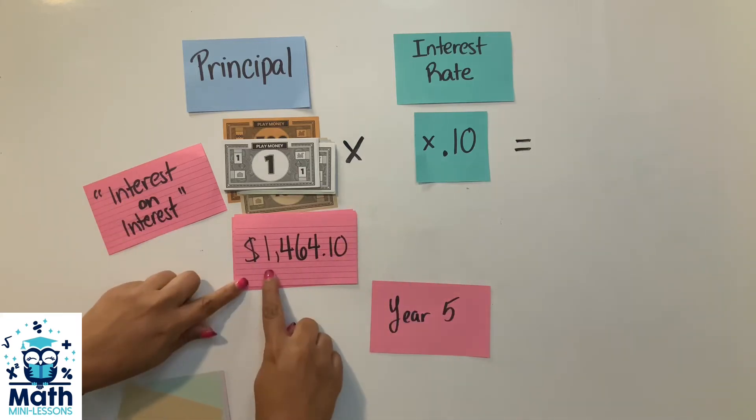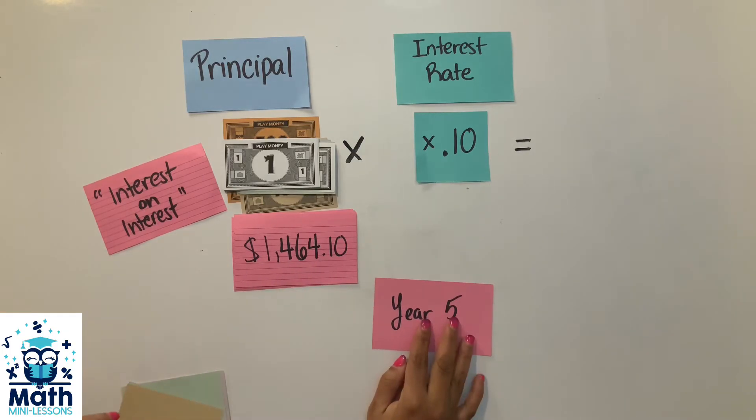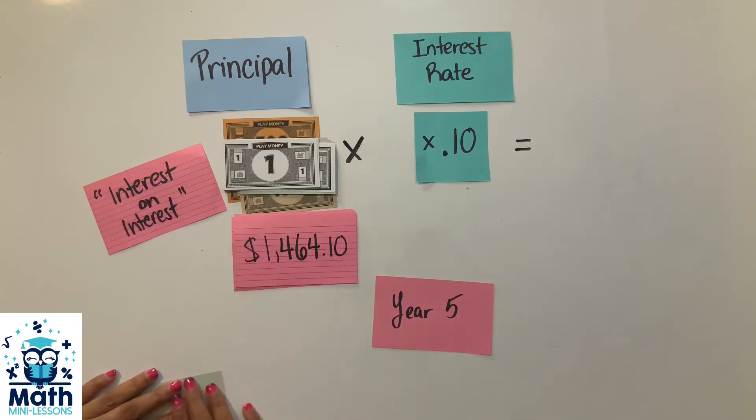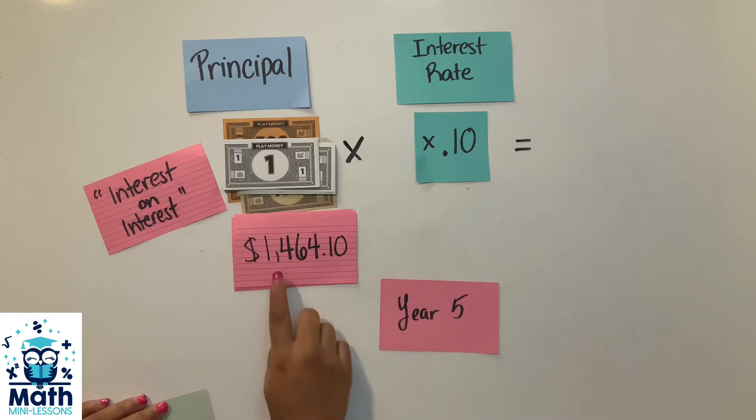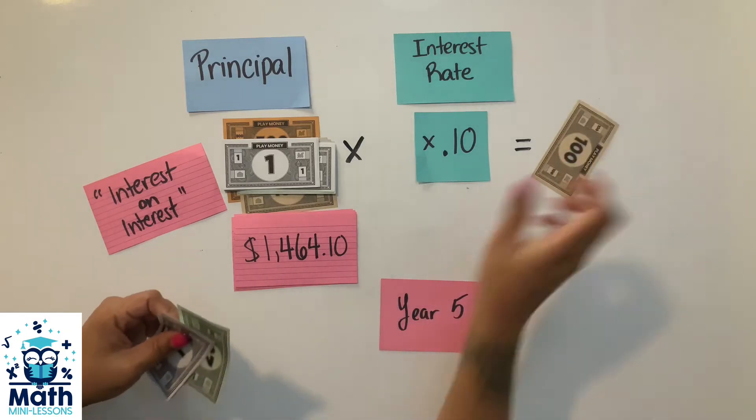So now look how big my pile has gotten - not only do I owe my original thousand dollars, but I also owe an extra $464. And now I'm up to this last year, and there was some change in there, I had another 10 cents. So in this year, if I'm finding 10%, it's $146 and 41 cents.